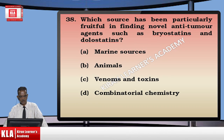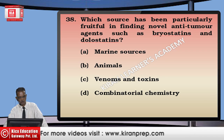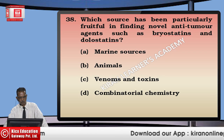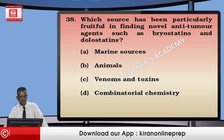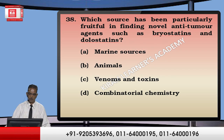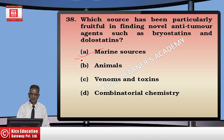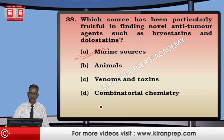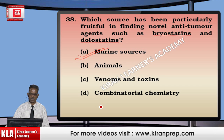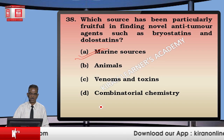Which source has been particularly fruitful in finding novel anti-tumor agents such as bryostatins and dolastatins? Marine sources are the correct answer. It has been found that some marine animals are rich sources of bryostatins and dolastatins, which are used as drugs in the treatment of cancer.